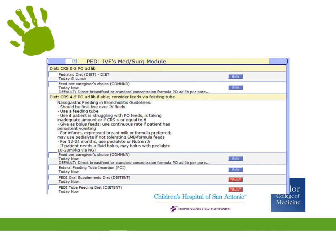Moving down the order set, you'll notice that the diet orders are separated by what CRS the patient has. Select the appropriate one. The preference is to use enteral feeds, either oral or by NG, over IV fluids. However, if you need IV fluids, you can expand the IV fluid module.